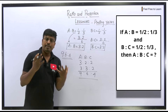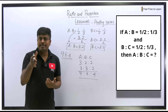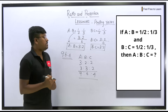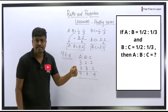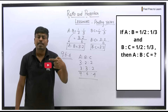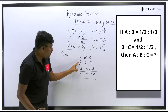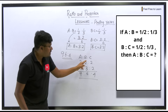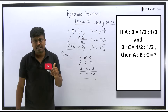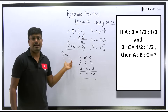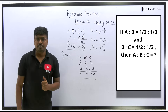Now apply the nearby-number technique: write 3:2 for a:b, fill c with nearby 2; write 3:2 for b:c, fill a with nearby 3. Multiply: 2×3 = 6 (wait — correcting: 3×3=9, 3×2=6, 2×2=4). Final answer for question 3 is 9:6:4.